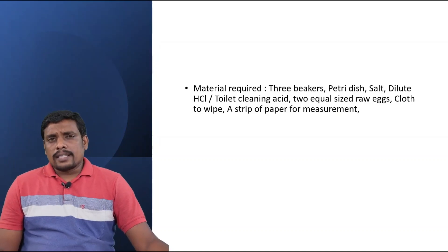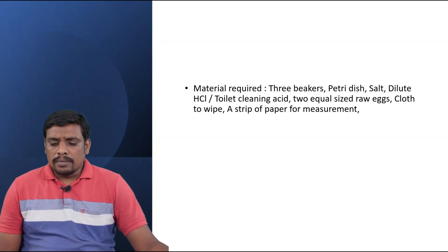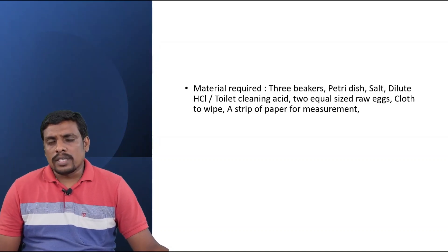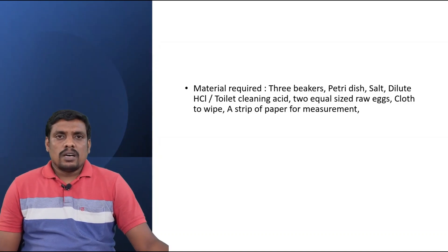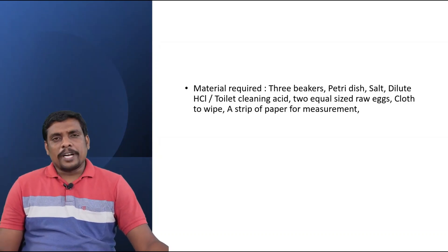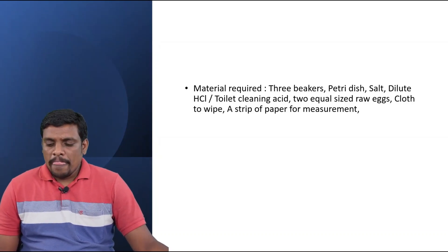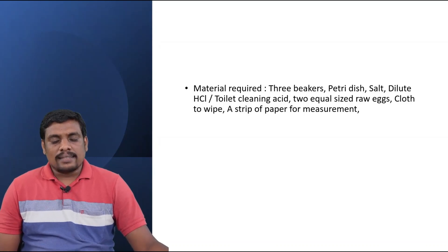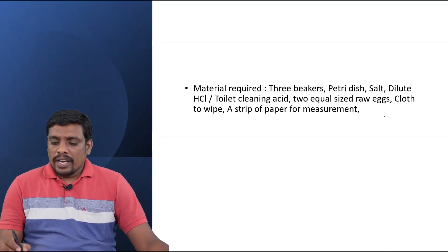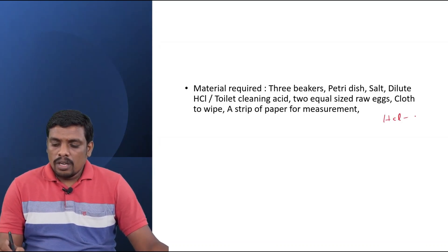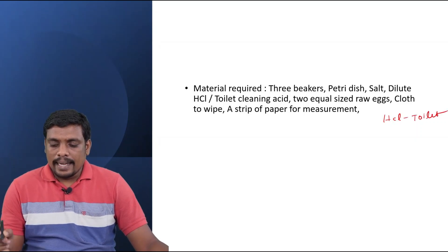For this experiment, we need some materials. You will need a beaker, water, HCl, and raw eggs. We also need a petri dish and dilute HCl — that is toilet cleaning acid. If HCl is not available, we can use toilet cleaning acid.